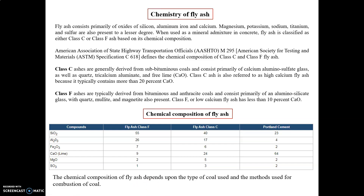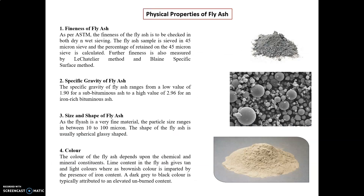Physical properties of fly ash: Fineness — as per American standards, fineness of fly ash is checked by both dry and wet sieving. The fly ash sample is assessed using a 45-micron sieve, and the percentage retained on 45 microns is calculated. Fineness is also measured by the Le Chatelier method and Blaine specific surface method. Specific gravity ranges from a low of 1.90 for sub-bituminous ash to a high of 2.96 for high-iron bituminous ash. Particle size ranges between 10 to 100 microns and the shape is typically spherical and glassy. Dark gray color is typically due to unburned carbon content.